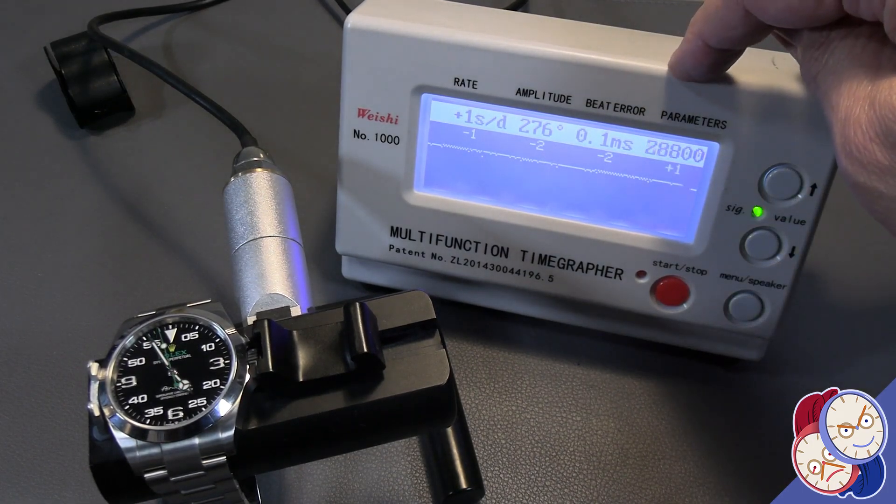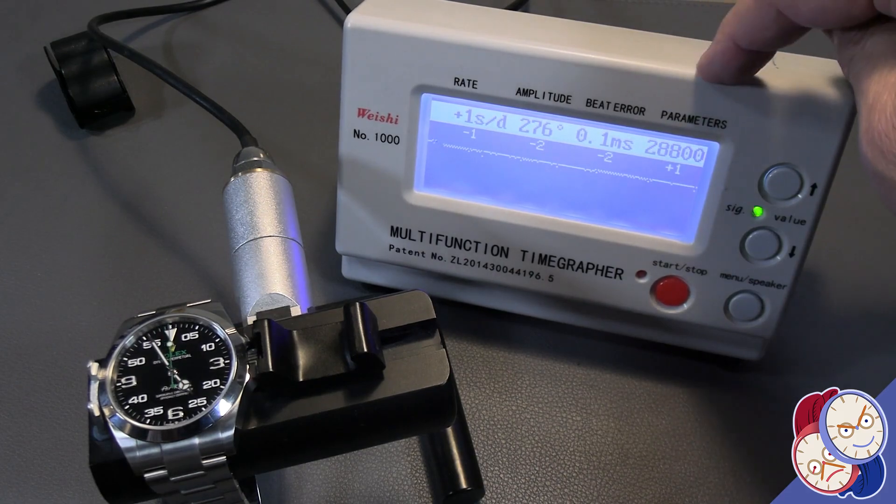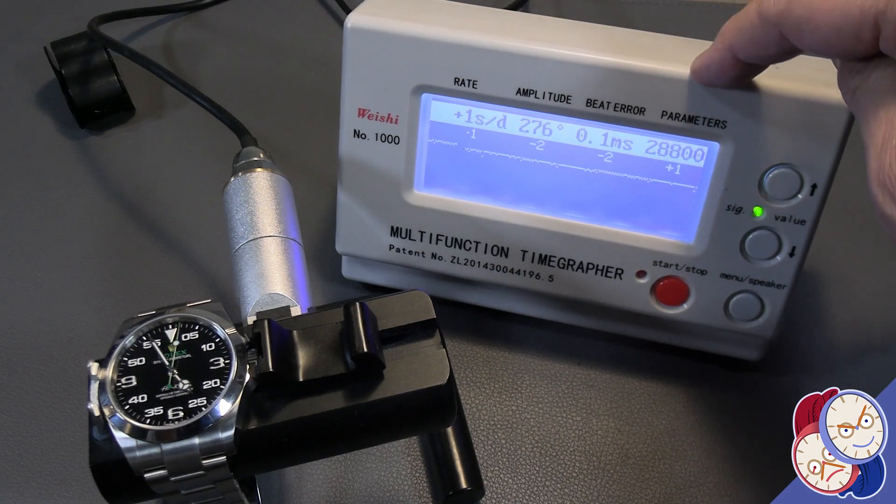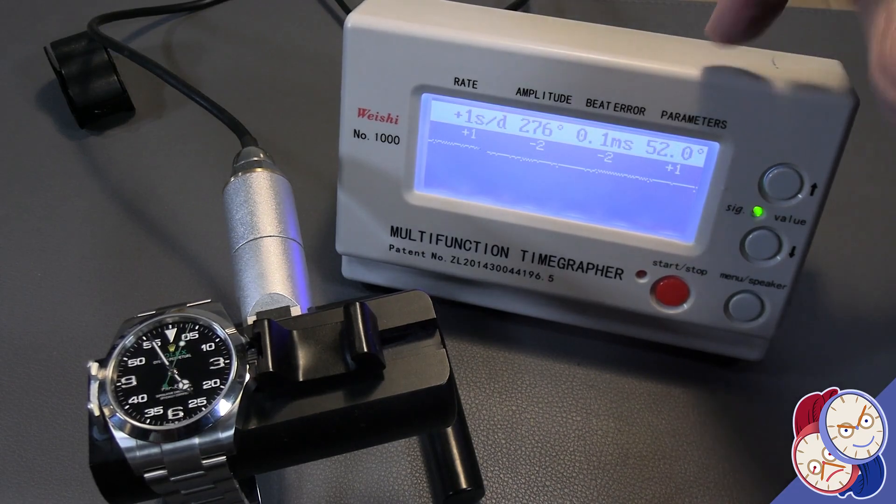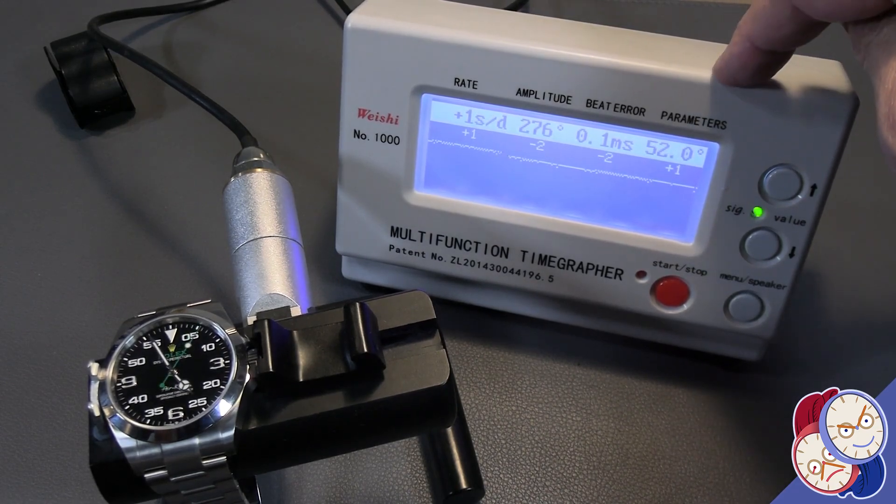And this, if you notice parameters, it bounces back and forth between 28,800, which is how many beats per hour. This means this is a 4 hertz watch, 8 beats per second.